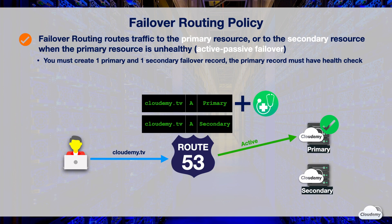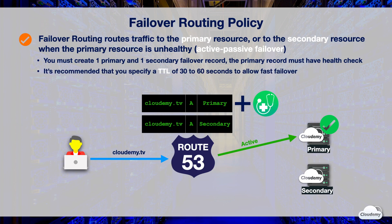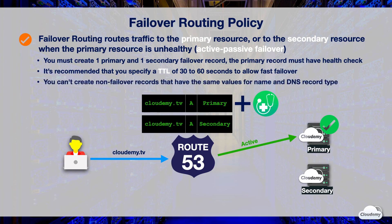Failover routing lets you create an active-passive failover for your resources. For example, you can redirect your traffic to an error page during your server downtime, and route the traffic back to the primary server when it's recovered. It's recommended that you specify a TTL of 30 to 60 seconds to allow fast failover when you associate a record with a health check. You cannot create non-failover records that have the same name and record type as failover records. For example, if you've created a simple routing for a domain using CNAME type, you cannot create failover records for that domain with CNAME again.